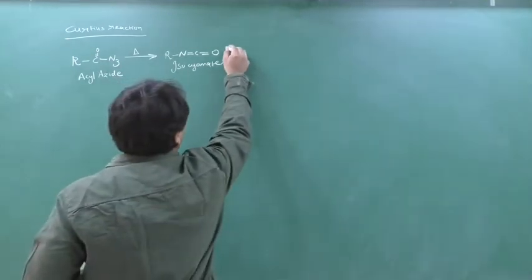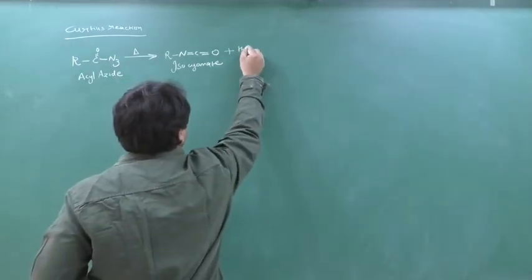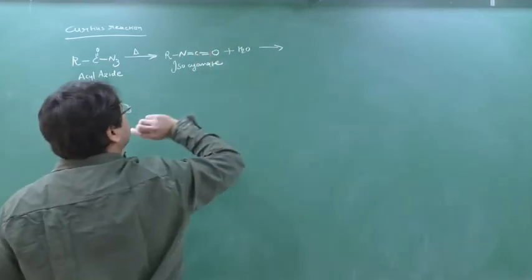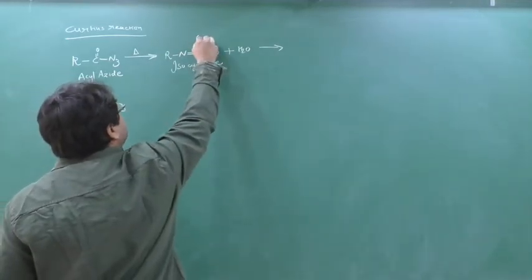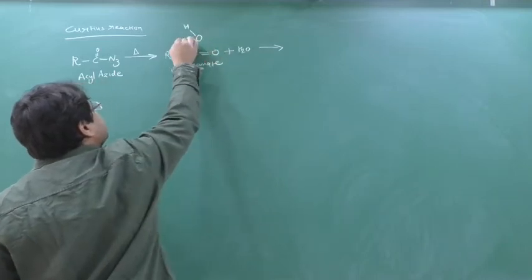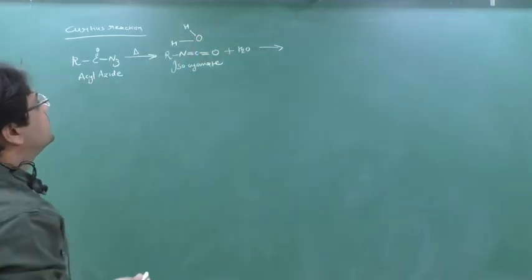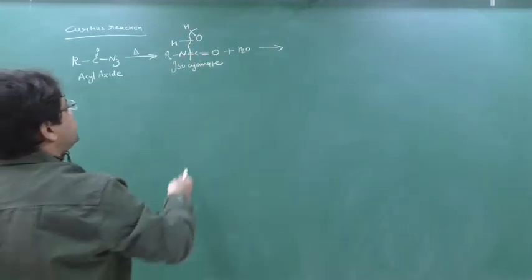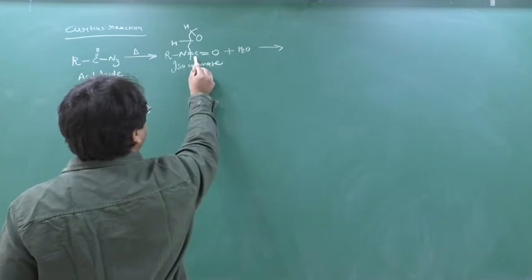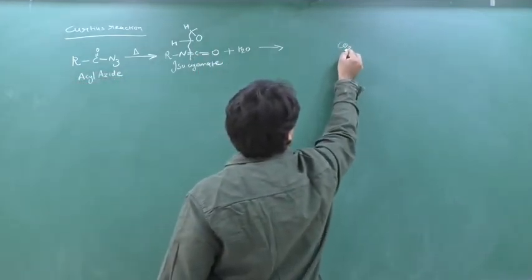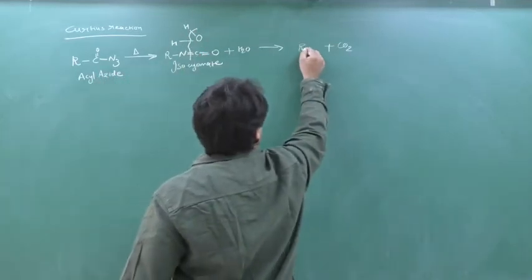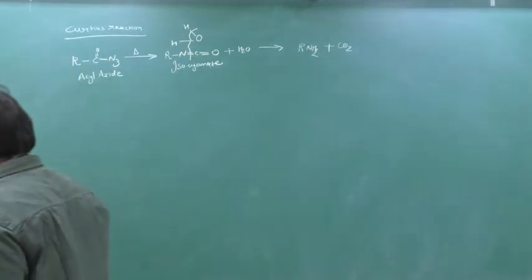Now we do the hydrolysis. Here is a shortcut to remember: water (H₂O) provides H and O–H. This portion will get broken, giving CO₂ plus R–NH₂. This is the Curtius reaction. So what does the Curtius reaction use? Acyl-azide. Azide means N₃. The acyl portion is R–C(=O), and combining with N₃ gives acyl-azide.